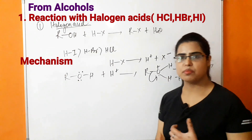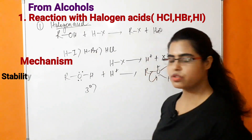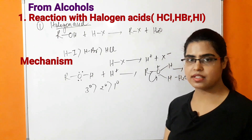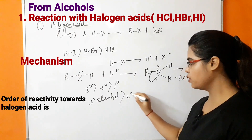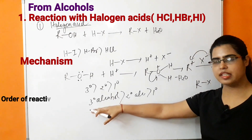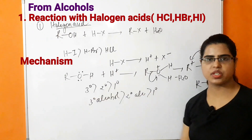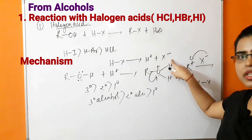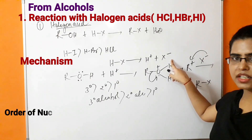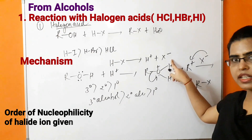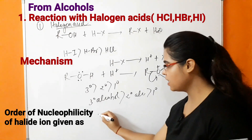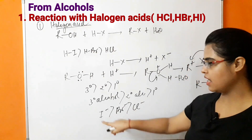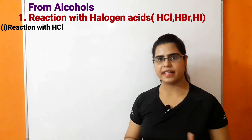The reactive intermediate is carbocation. The stability order of carbocation is: tertiary (3°) is most stable, then secondary (2°), then primary (1°). Therefore, the order of reactivity of alcohols toward halogen acid is: 3° alcohol > 2° alcohol > 1° alcohol. Similarly, the greater the nucleophilicity of the halide ion, the greater its reactivity toward carbocation: I⁻ > Br⁻ > Cl⁻.